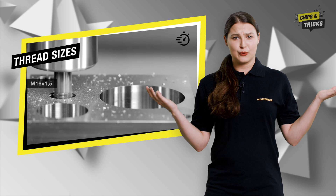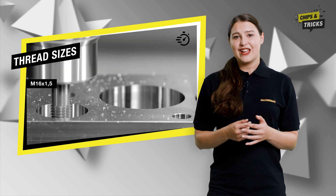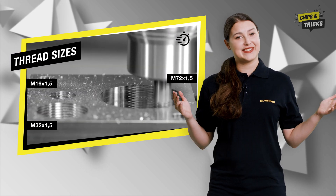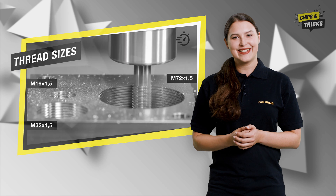In contrast to thread tapping and flute-less tapping, the pitch and diameter are separated from one another during thread milling. The result? You can create different thread sizes with the same pitch with the same tool. In thread milling, the thread geometry is not directly connected to the tool, as in the case with thread tapping or flute-less tapping.